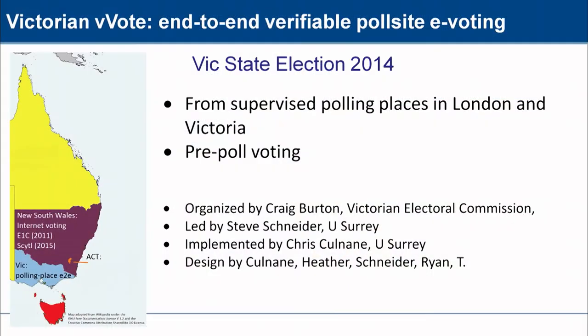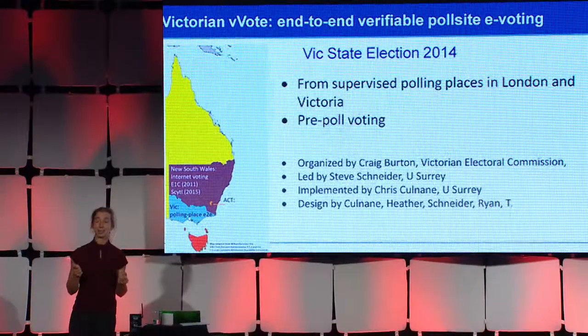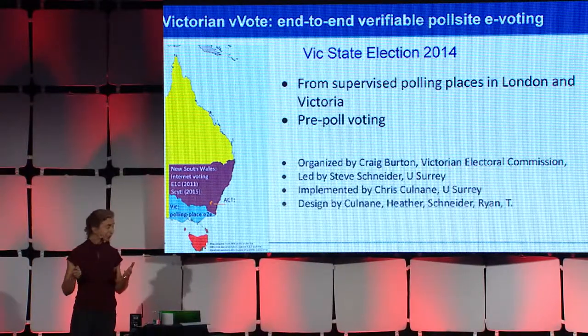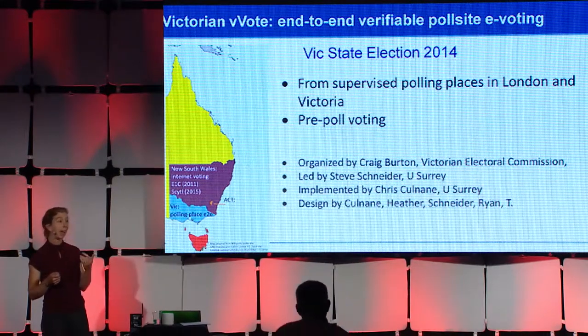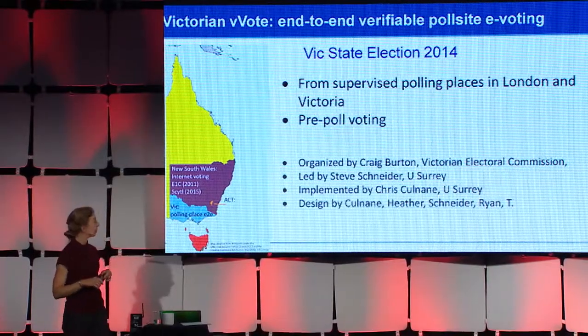Now I'm going on to the main topic of my talk, which is a project that we ran in my home state of Victoria to run an end-to-end verifiable system in a polling place that allowed people to vote at a location either outside of the state or outside of their normal precinct. In particular, the system took nearly a thousand votes from the Australian embassy in London. There are lots of expat Australians who live in London and wanted to vote in the Victorian state election, and the state election commission didn't want to haul a big bag of paper ballots back on an aeroplane.